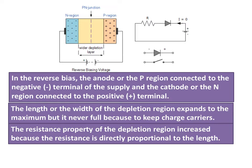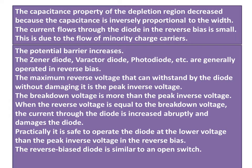The length or width of the depletion region expands to the maximum, but it never fully fills because of the charge carriers. The resistance property of the depletion region increases because resistance is directly proportional to the length. The capacitance property of the depletion region decreases because capacitance is inversely proportional to the width.